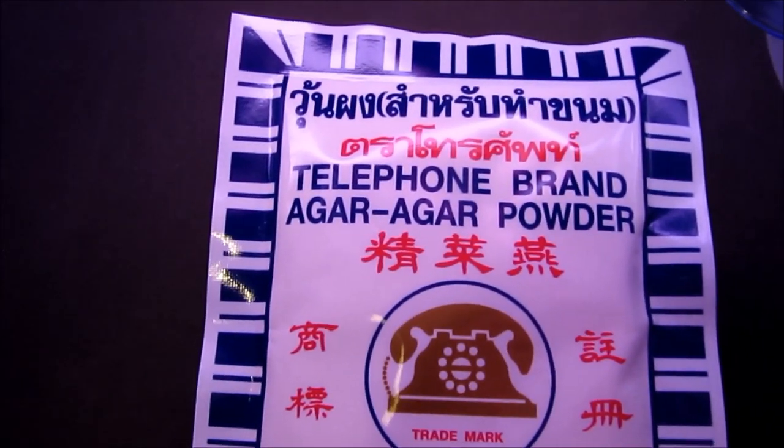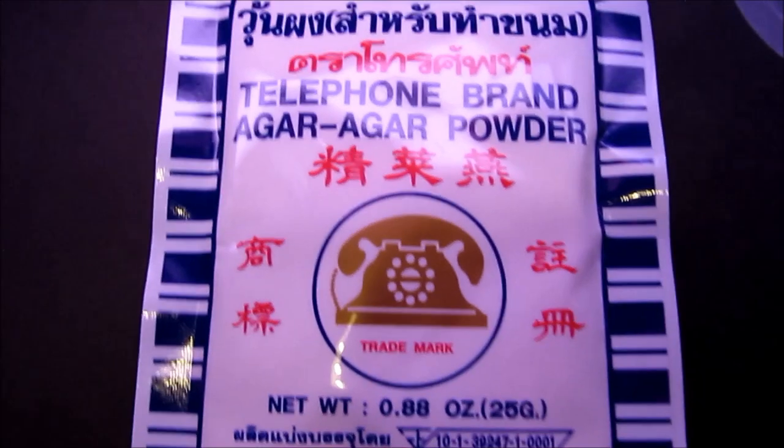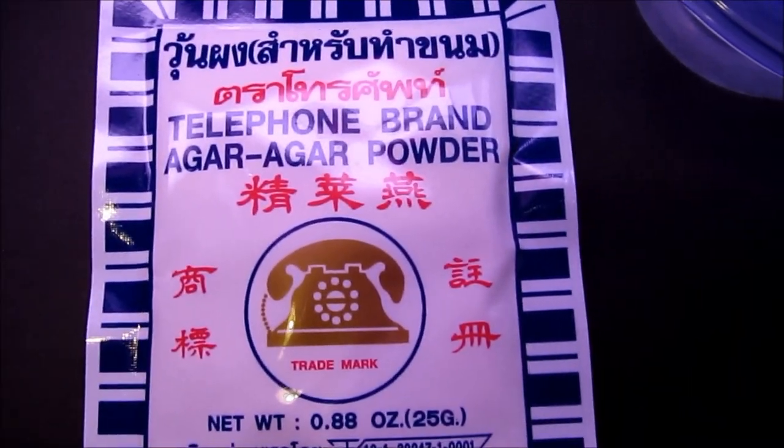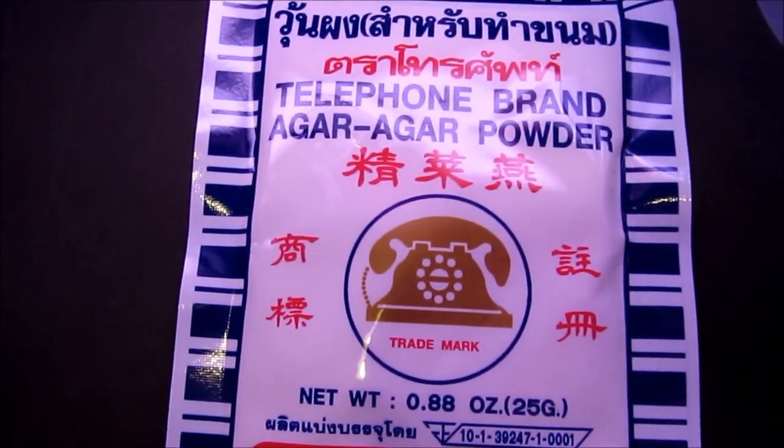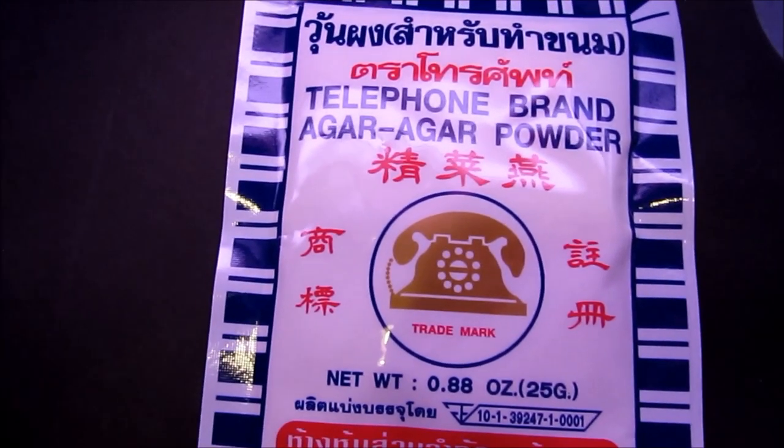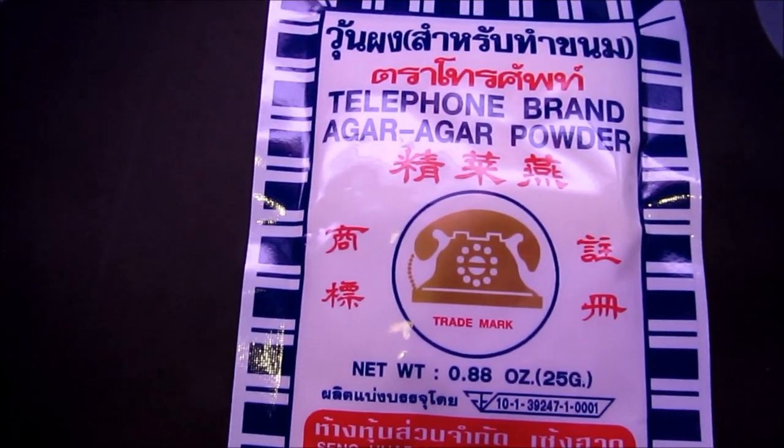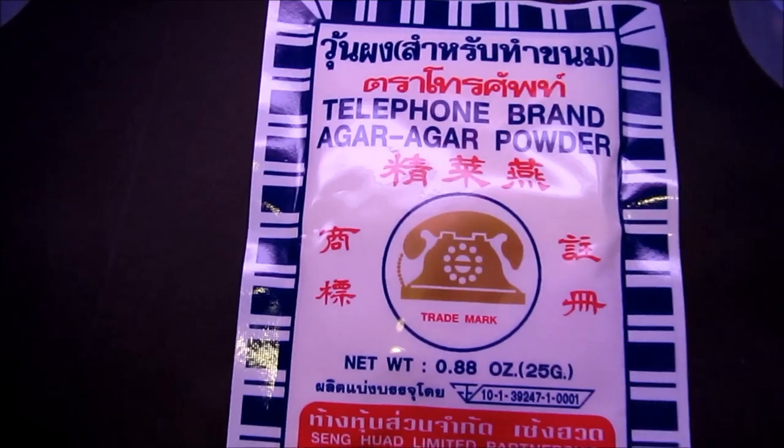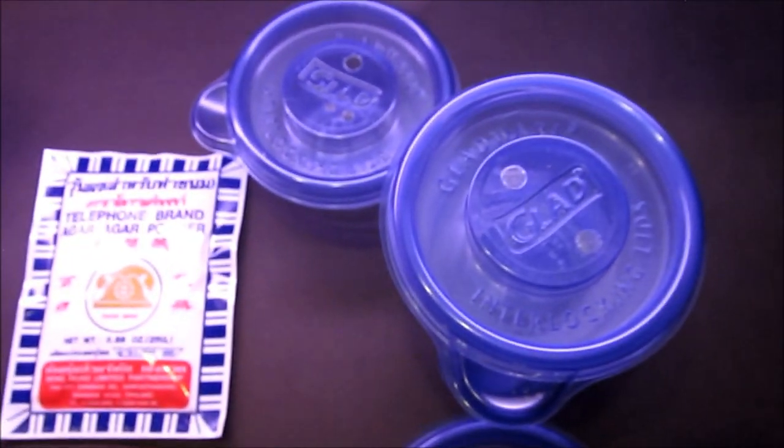Mine keeps it behind the counter for some reason, but Telephone brand agar powder is what you're looking for. Runs like a buck fifty for a package - that's twenty-five grams, so that's probably two batches of agar there for seventy-five cents a batch. The Glad rounds are reusable. Now you're all set, happy pasty plates.